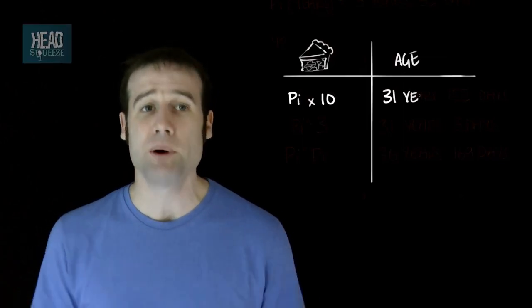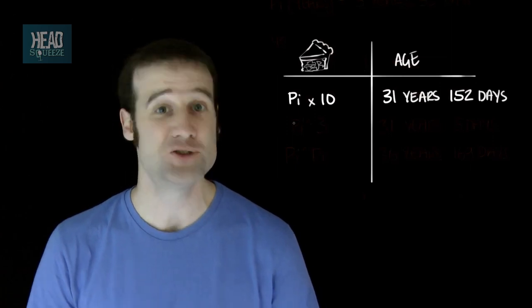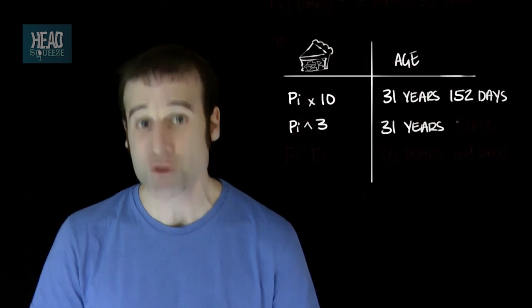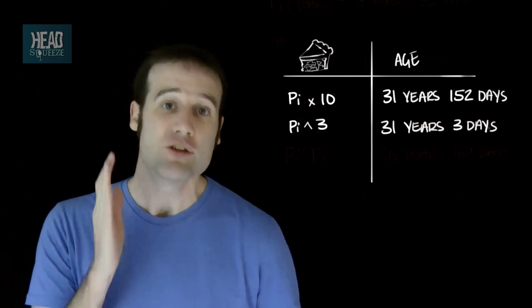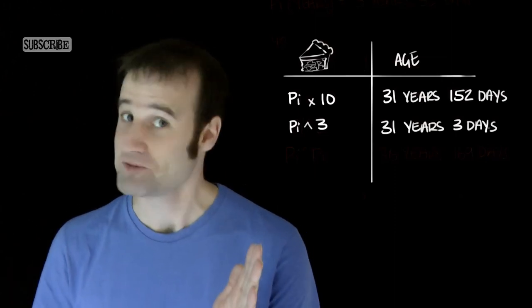So you turn 10 pi when you're 31 years and 152 days old. You turn pi cubed birthdays when you're 31 years and 3 days old. So that's easy to remember. 3 days after your 31st birthday, you turn pi cubed. I remember that too.